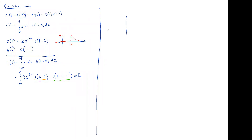The first part is u(τ-2). The step changes when its argument is 0, and the argument is 0 when τ=2. For very large τ the argument is positive, so the step is 1. For very negative τ the argument is negative, so u of a negative number is 0. That gives us a step that turns on at τ=2.